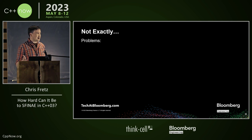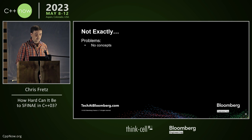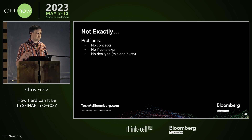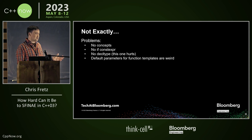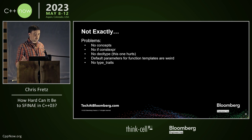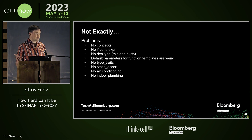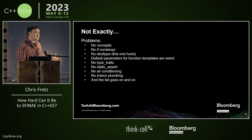There are multiple problems. First, obviously in C++03, there are no concepts — that's a brand new feature. Second, there's no if constexpr, which is also relatively recent. Third, there's no decltype, and this one really hurts. Fourth, default parameters for function templates are kind of weird — I think the standard is supposed to support them, but in some of the older compilers we tried, they don't work. There's also no type traits, no static_assert, no air conditioning or indoor plumbing. All of these modern features we expect are just completely missing.